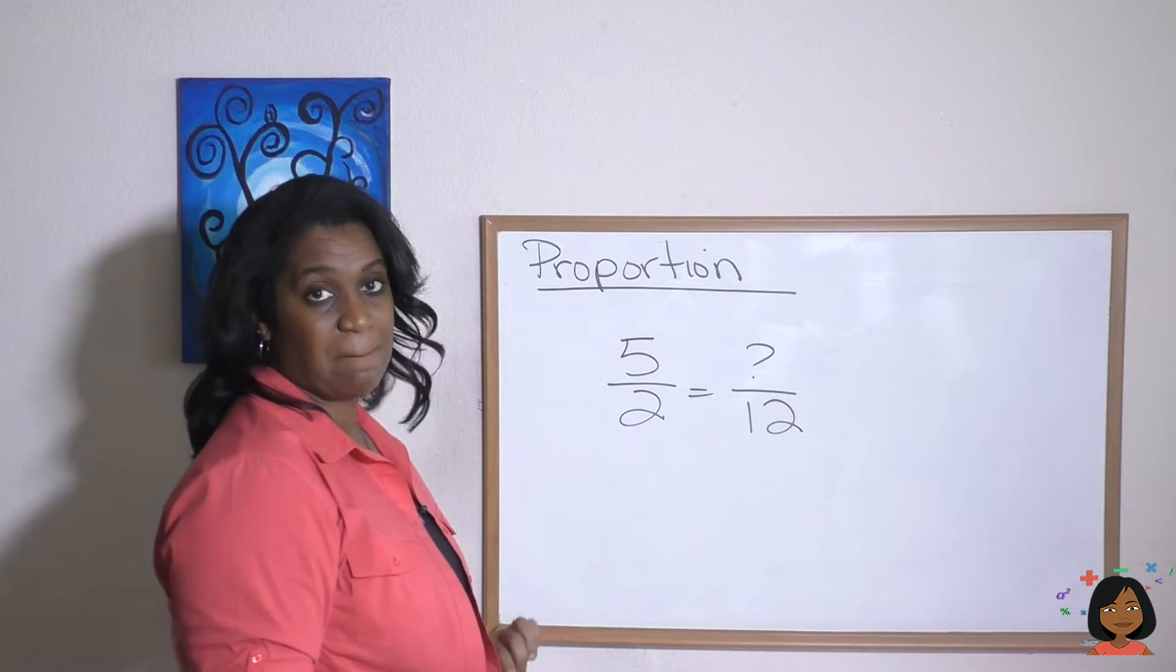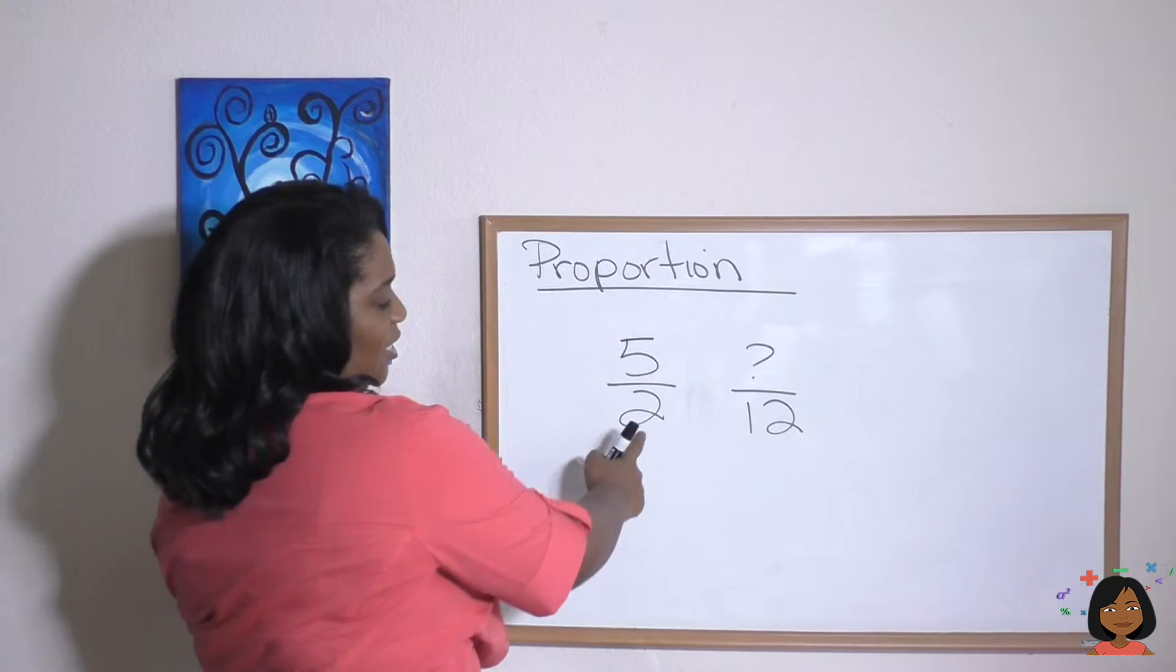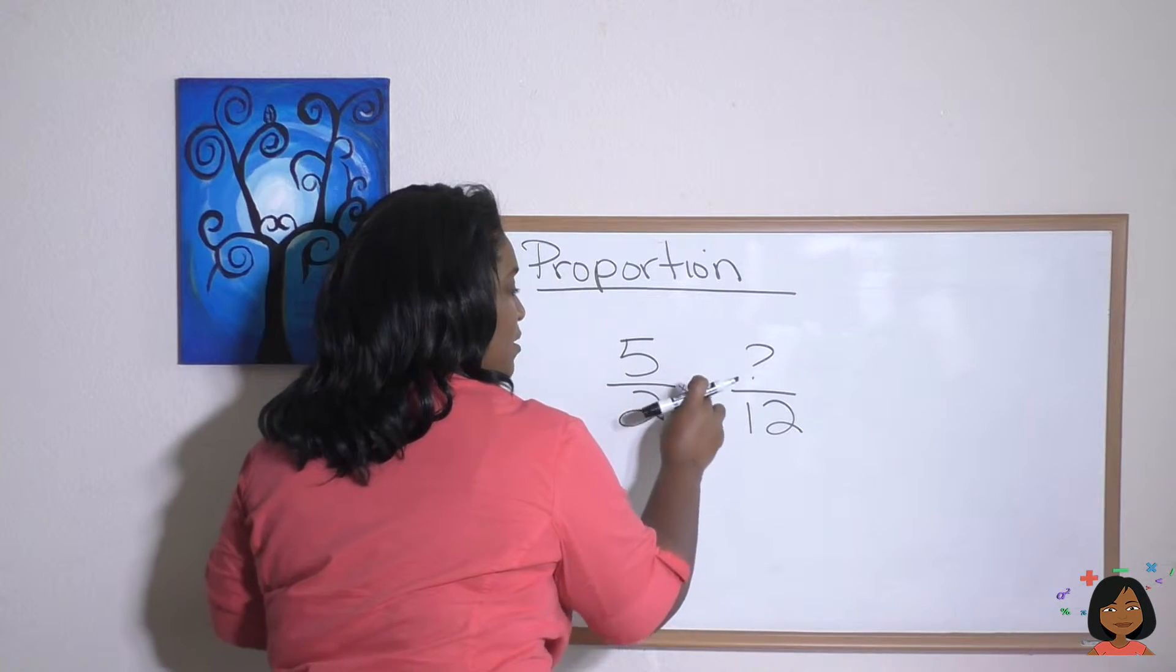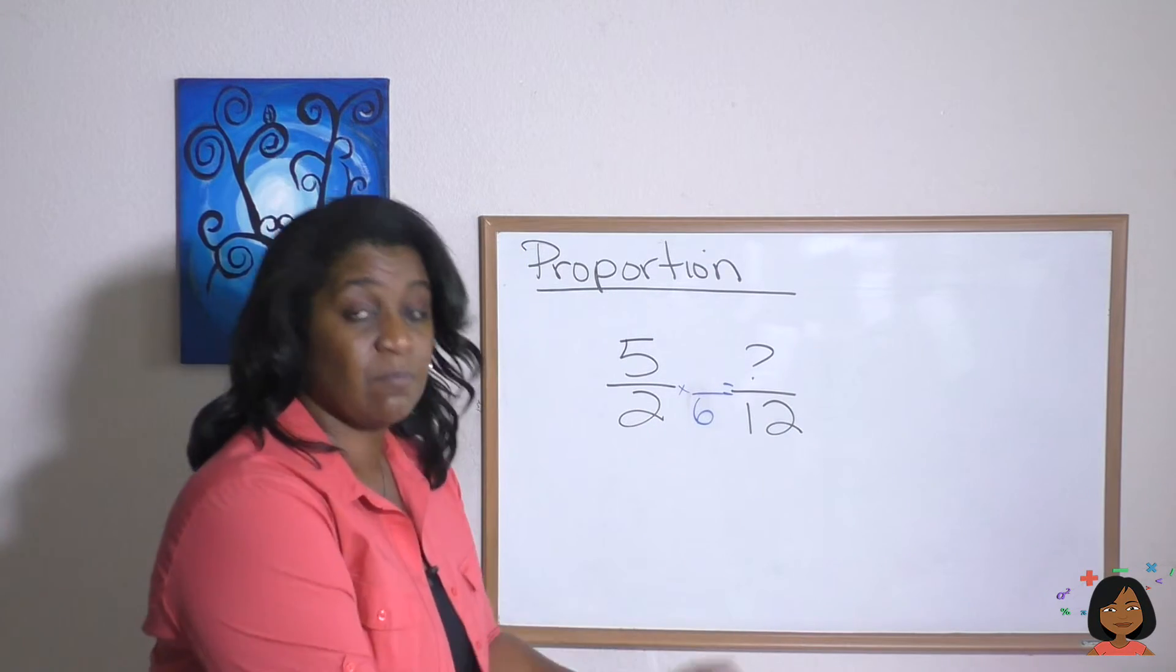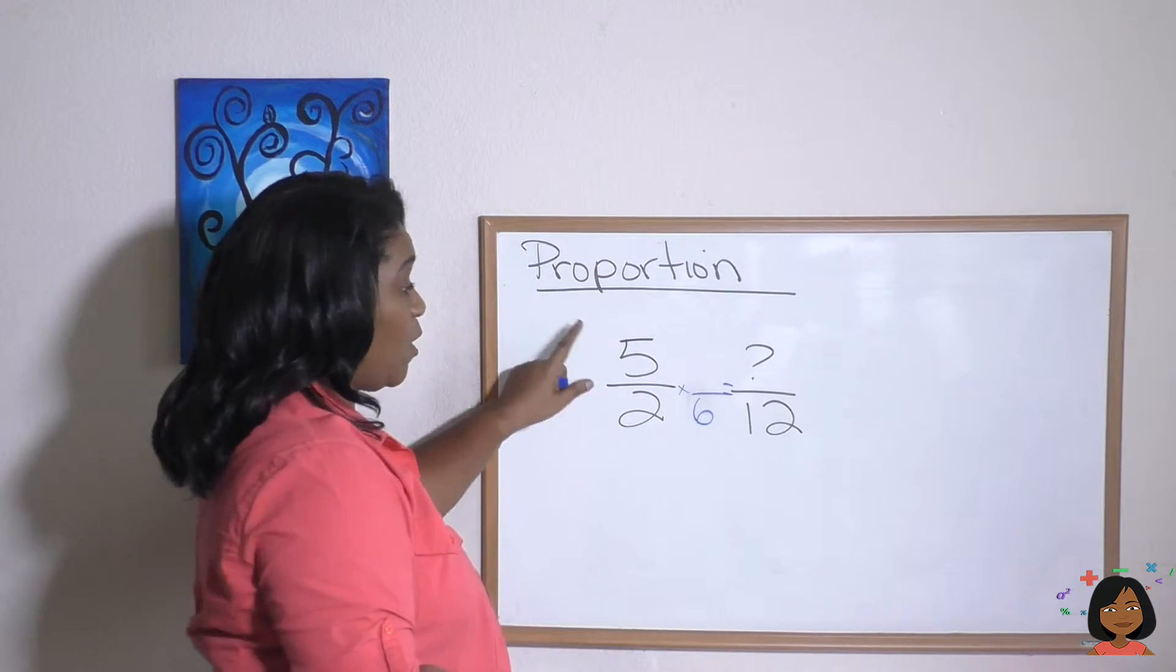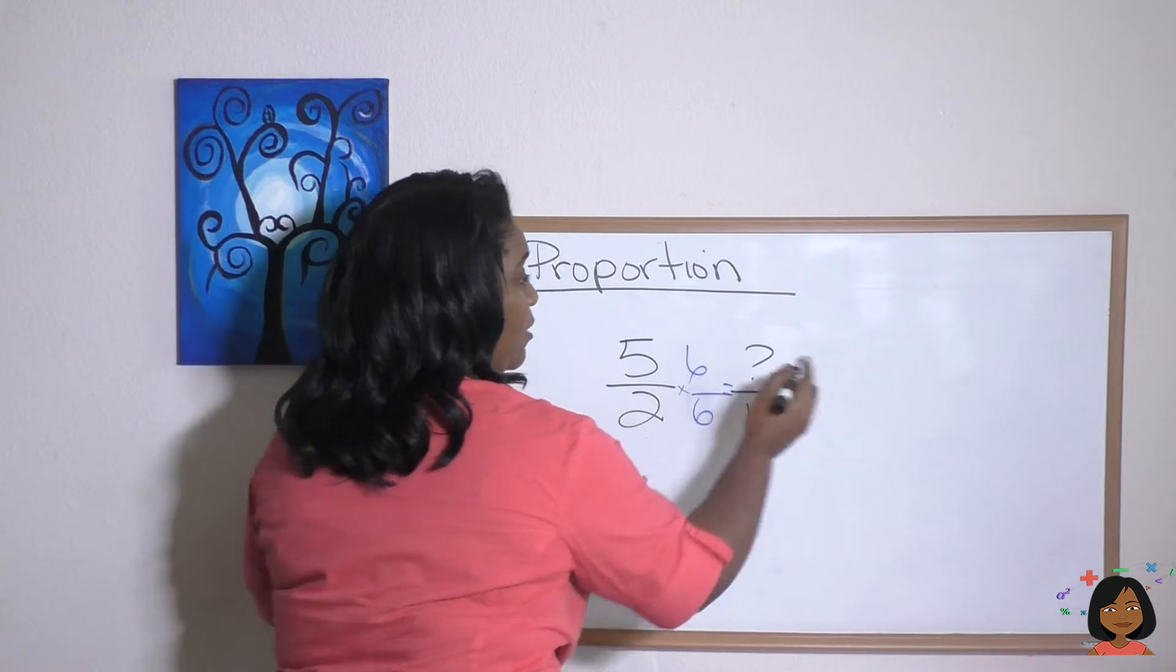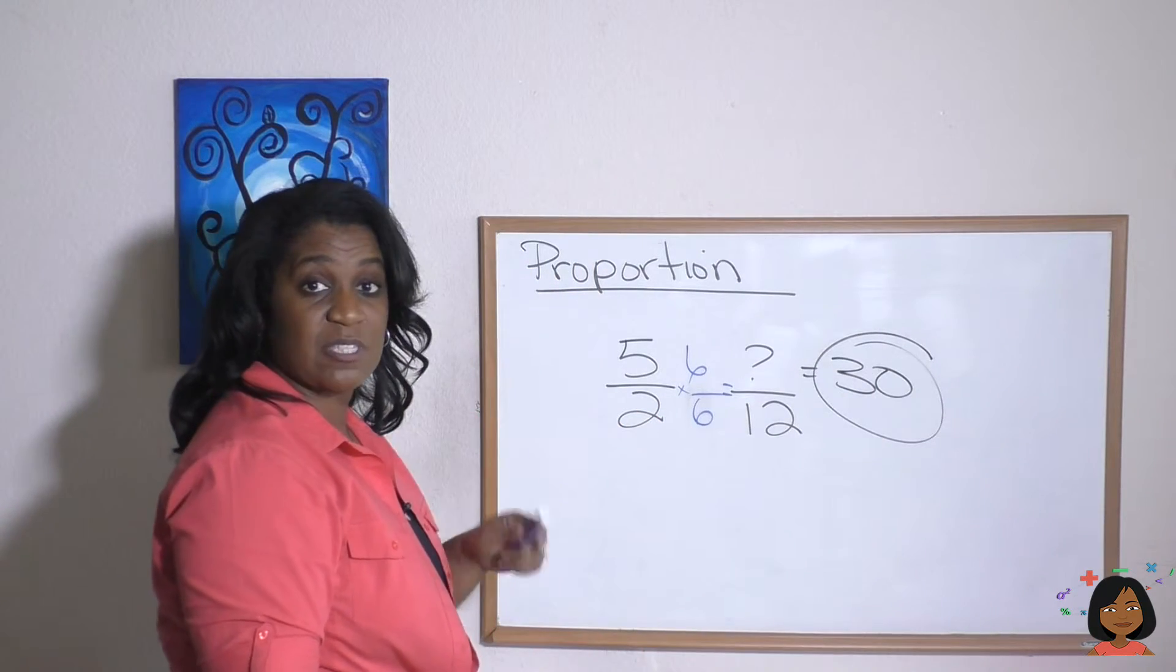Well, we know we're looking for that missing equivalent. So 2 times what is 12? Well, we know 2 times 6 is 12. And what you do to the bottom, you got to do to the top. So 5 times 6 is going to give me 30. And that would be my answer for the missing proportion.